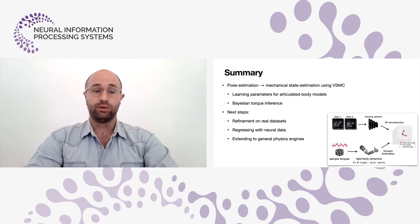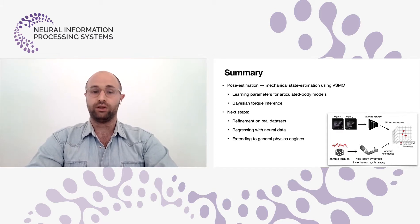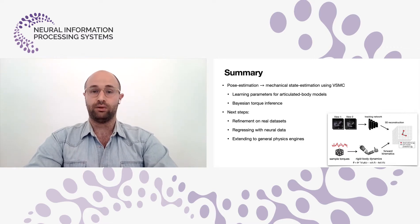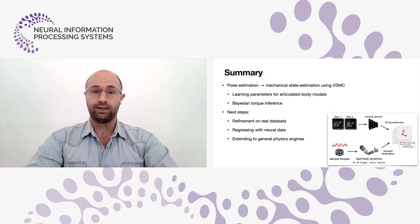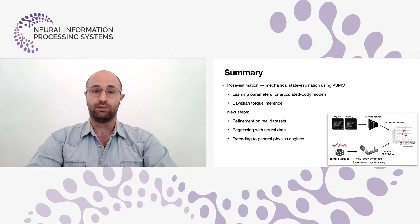To summarize, we transform the pose estimation problem into a mechanical state estimation problem and use variational sequential Monte Carlo. We learn parameters of the articulated bodies and infer their mechanical states and torques using Bayesian inference. We think this has lots of applications to neuroscience — for example, to ask what quantities the motor cortex cares about, or what the difference is between stroke patients and control patients. We'd like to refine our real datasets on mouse and humans, regress to neural data, and extend our transition model to include general physics engines. Thank you.